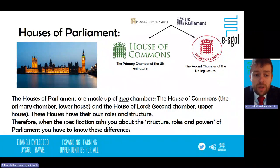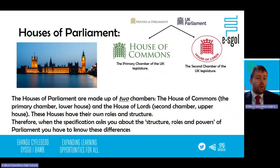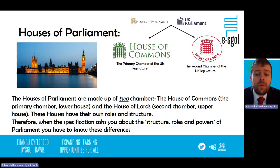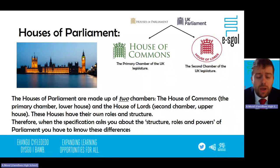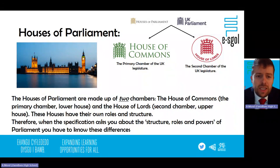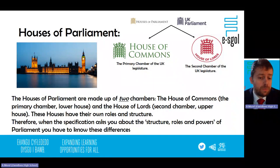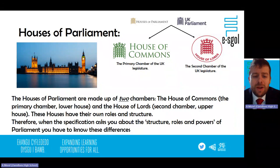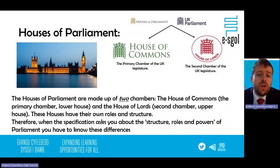The Houses of Parliament are very iconic — we all know the picture of Big Ben. The Houses of Parliament are made up of two chambers: the House of Commons and the House of Lords. The House of Commons is known as the primary chamber and the lower house — primary because that's primarily where legislation comes from. The House of Lords is often called the second chamber and is the upper house. These houses have their own roles and structures, with both similarities and distinct features.